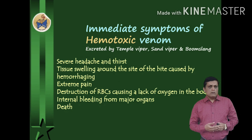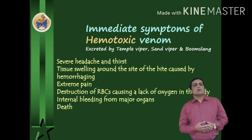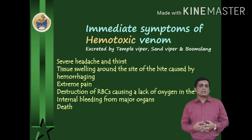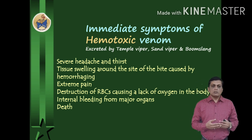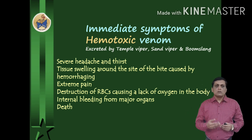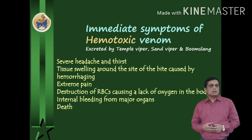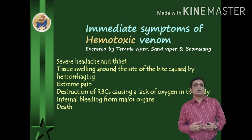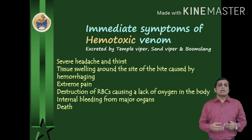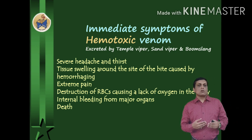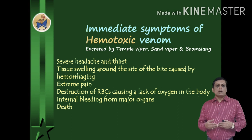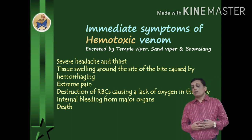The immediate symptoms of hemotoxic venom include tissue swelling around the site of the bite caused by hemorrhage, extreme pain, destruction of RBCs causing a lack of oxygen in the body, internal bleeding from major organs, and finally death.